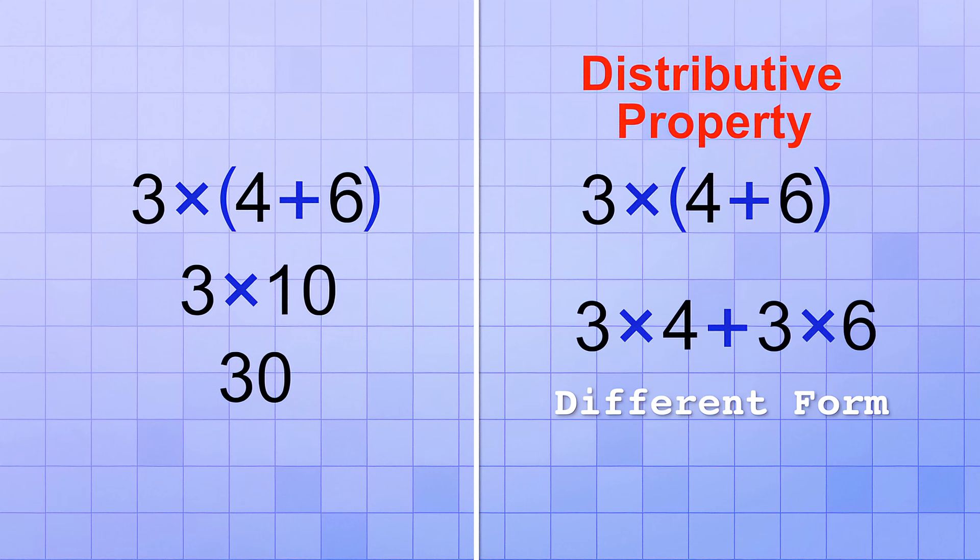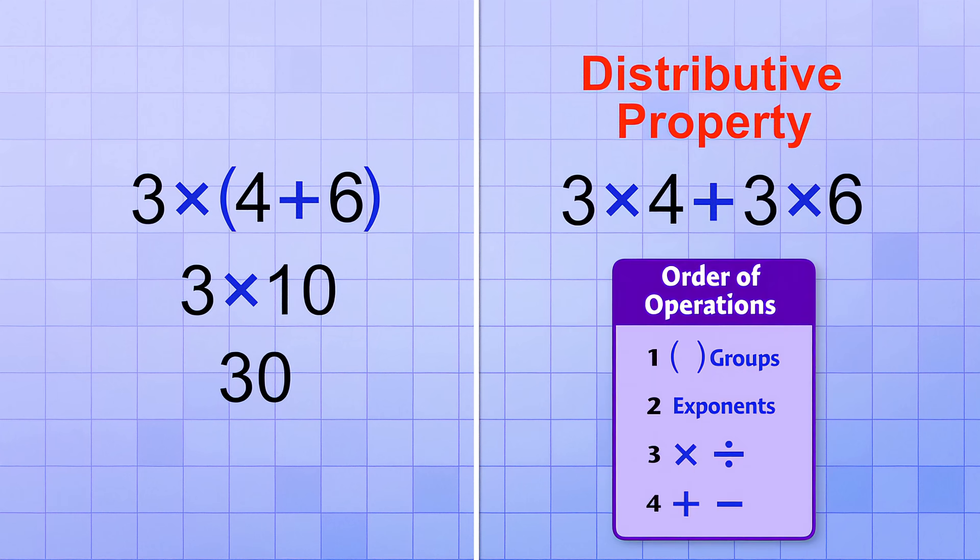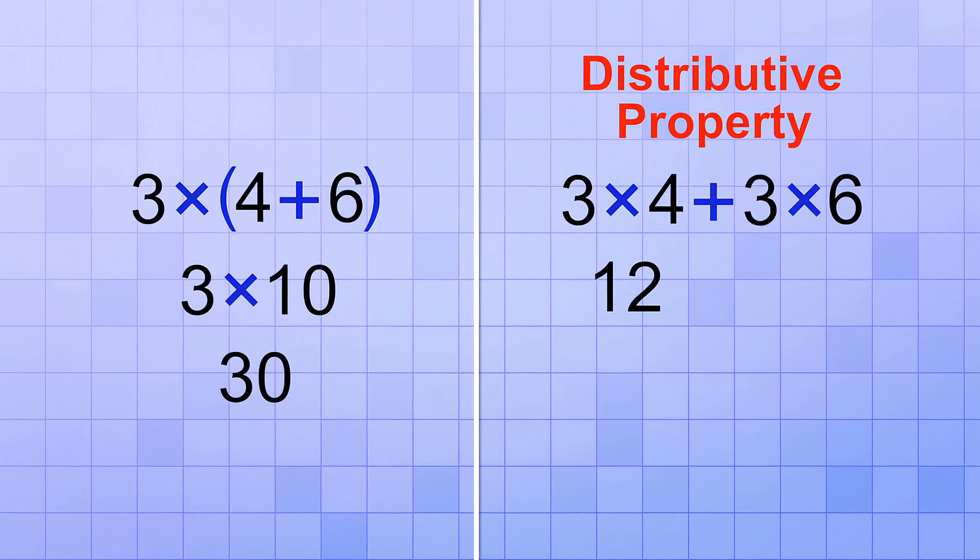Now, we can continue to simplify this new form using our order of operations rules. Those rules tell us to do multiplication before addition. So, 3 times 4 is 12, and 3 times 6 is 18. The last step is to add those two results together. 12 plus 18 equals 30.